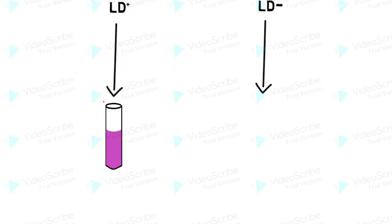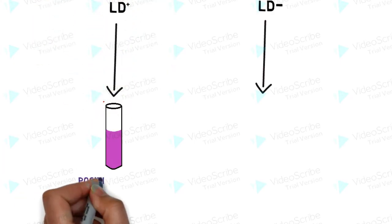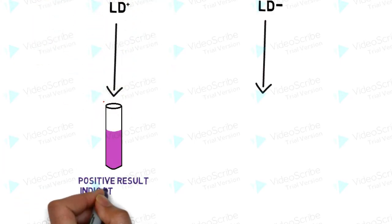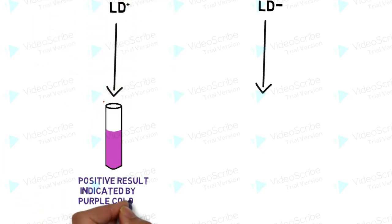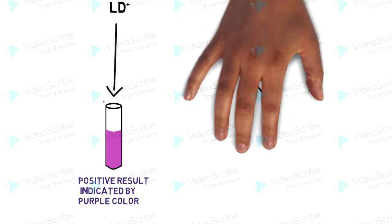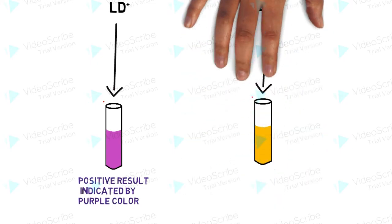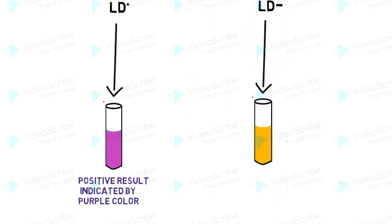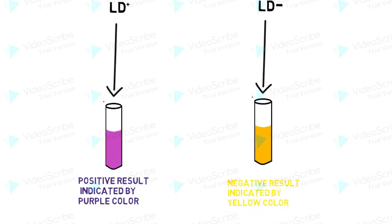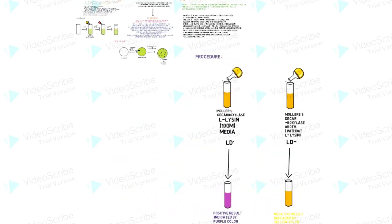Interpretation of result: the appearance of purple colour represents a positive Decarboxylase Test. The appearance of yellow colour represents a negative Decarboxylase Test. The appearance of white colour represents...